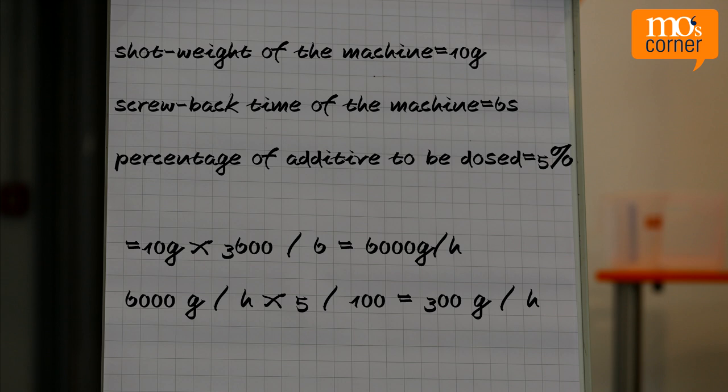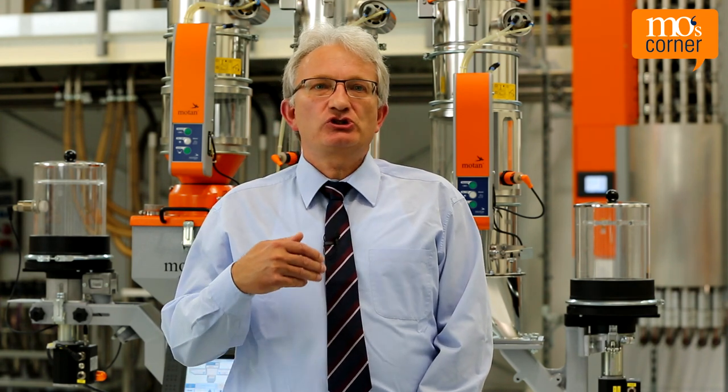What general things need to be kept in mind for the shot weight? Dosing devices have the task of dosing the respective recipe components. For synchronous dosing processes, they always run synchronously to the intake of the processing machine. It is important that the dimensions of the dosing devices are chosen so that the dosing device passes on the material flow synchronously and consistently during the available intake time.